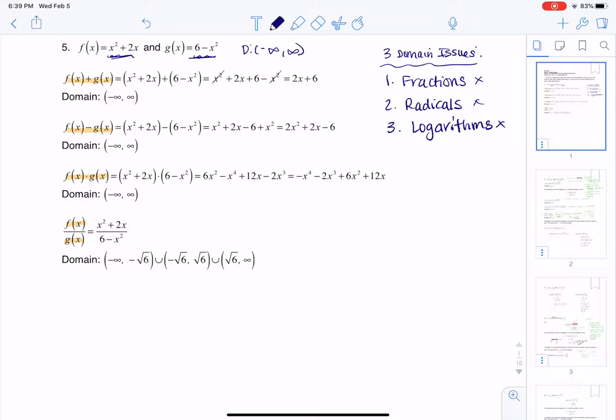So how this works is when I'm adding them together, I still get a function that has no fractions, no radicals, no logs. So that's why the domain here is all real numbers.